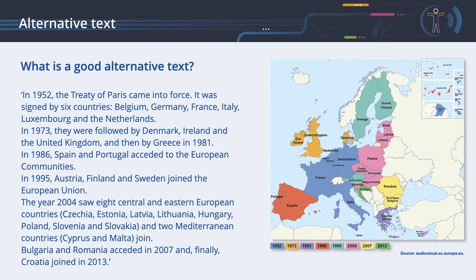In 1986, Spain and Portugal acceded to the European communities. In 1995, Austria, Finland, and Sweden joined the European Union. The year 2004 saw eight Central and Eastern European countries — Czechia, Estonia, Latvia, Lithuania, Hungary, Poland, Slovenia, and Slovakia — and two Mediterranean countries, Cyprus and Malta, join. Bulgaria and Romania acceded in 2007. And finally, Croatia joined in 2013.